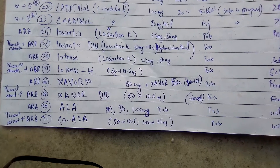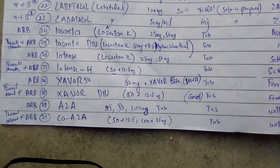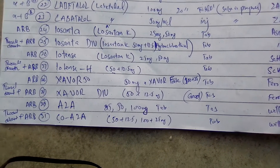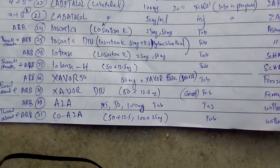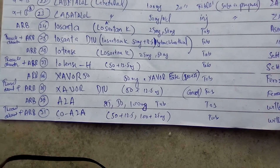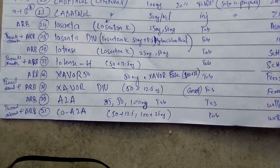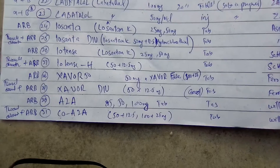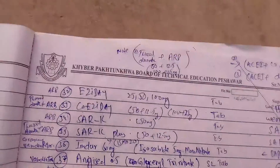Co-A2A is available in two strengths: one contains losartan potassium 50 mg with hydrochlorothiazide 12.5 mg, and another contains losartan potassium 100 mg with hydrochlorothiazide 25 mg. Another drug is Co-Ezyday, which also contains losartan potassium.